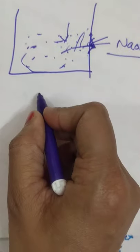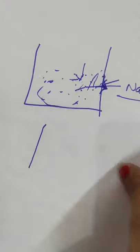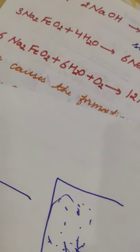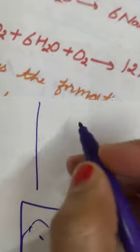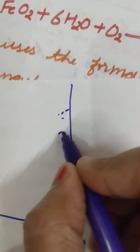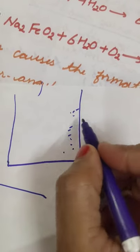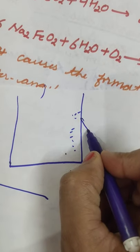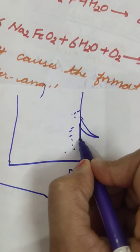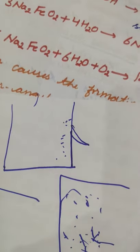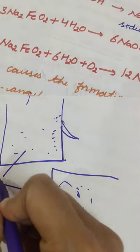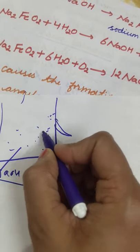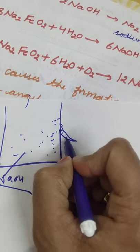How is the concentration cell formed? Let me draw a diagram and explain. This is a surface, and this surface has water on it. In that water, there is a concentration of NaOH.